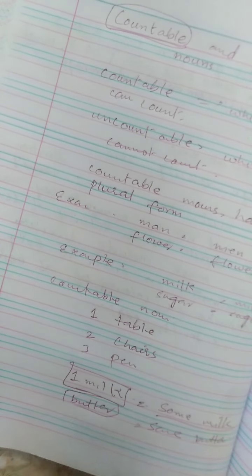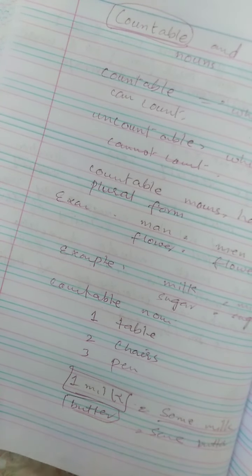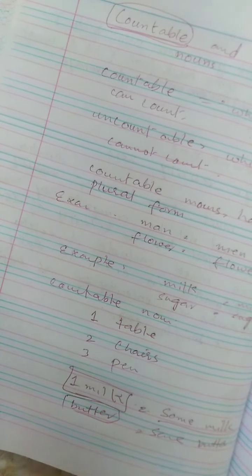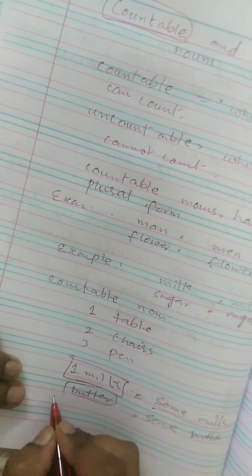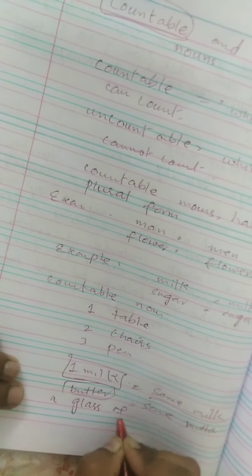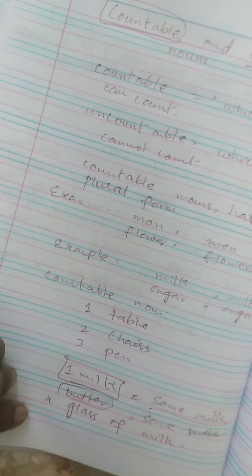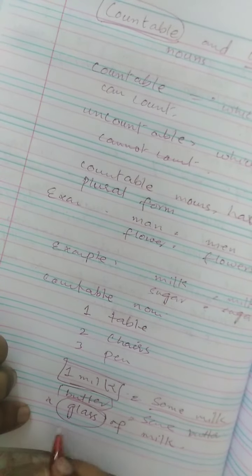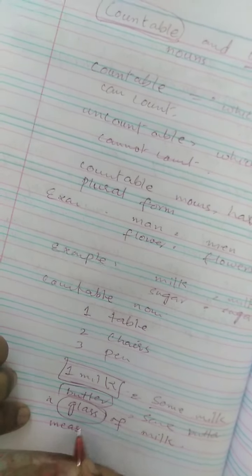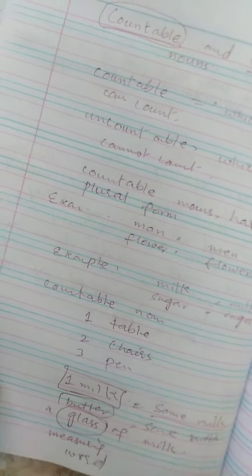Yes, usko count karne ka ek tariqa hai. We should write a measuring word before countable nouns. Like, a glass of milk. Glass jo hai na, this is measuring word for uncountable noun.